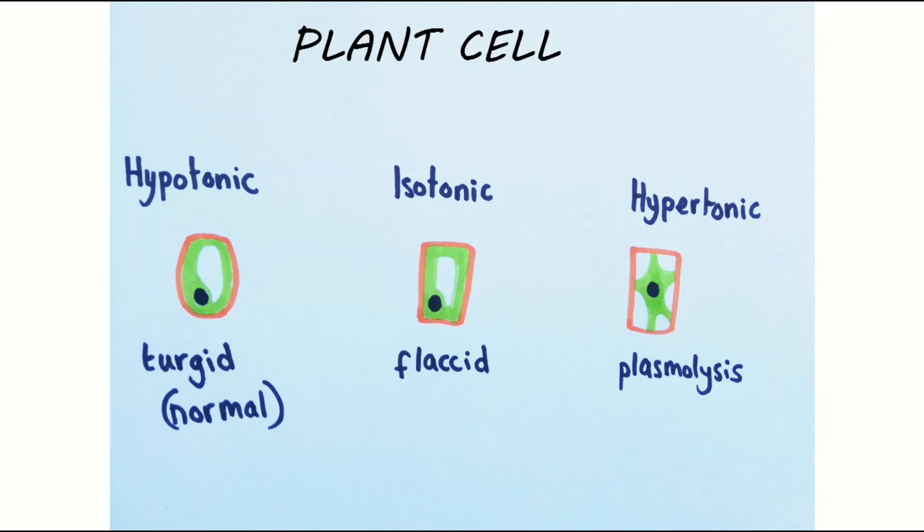In a solution of equal concentration to the cytoplasm, which is isotonic, there will be no net movement of water and the cells may be a bit flaccid and the plant may start to wilt.